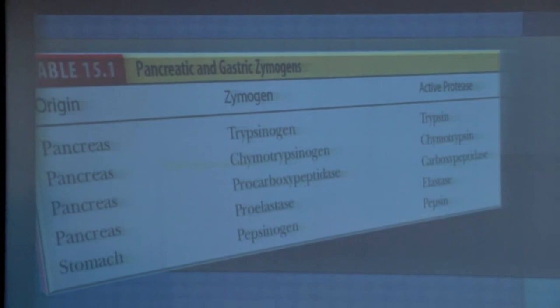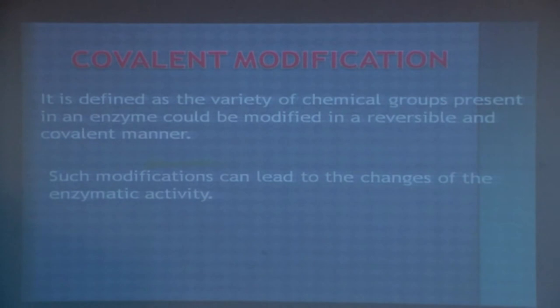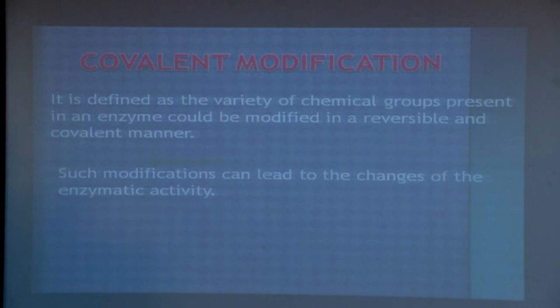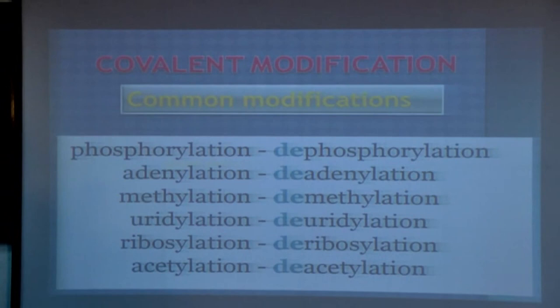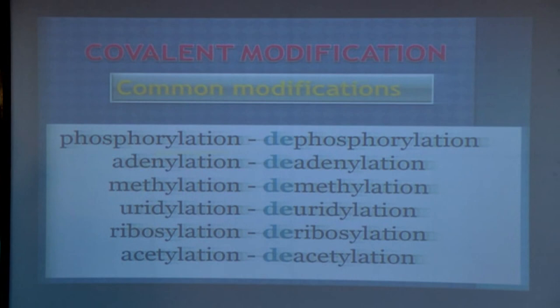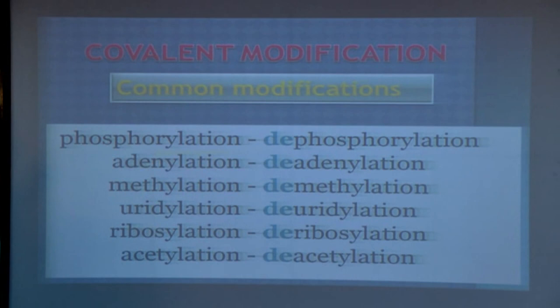The next process involved in enzyme regulation is covalent modification. Covalent modification is the removal or addition of a chemical group that converts the inactive form of the enzyme to the active form. Mainly, a phosphate group is added to the active site surface of the enzyme. Examples include phosphorylation and dephosphorylation, adenylation and deadenylation, methylation and demethylation, and acetylation and deacetylation.